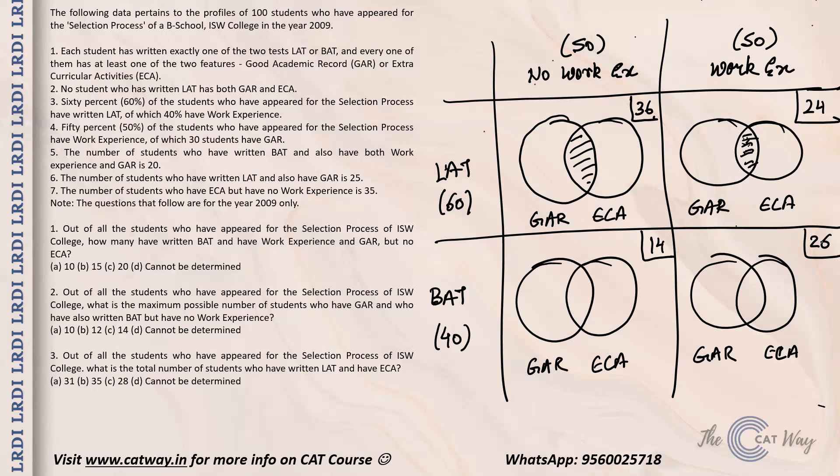Of the students with work experience, 30 have GAR. Also, the number of students who have written BAT and have both work experience and GAR is 20. So the BAT, work experience, GAR cell totals 20.